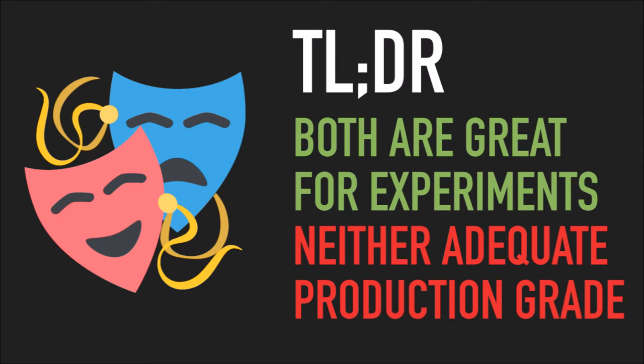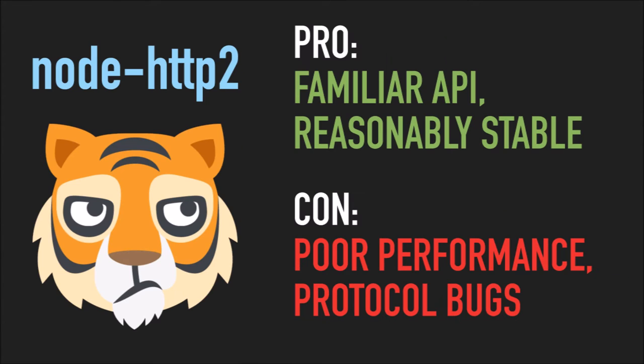There are some new primitives in the protocol you can use, like server push — you can push assets from the server to the client that haven't been requested yet because you're anticipating them. The first one, node-http2, has a really clean API. If you're familiar with the Node hello world example, the API for this library is almost exactly the same.